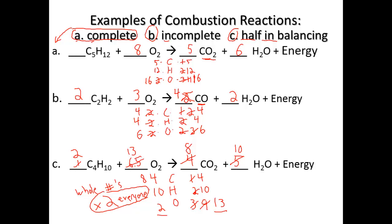We end up with eight carbons, twenty hydrogens, and twenty-six oxygens. On the same side, eight carbons, sixteen plus ten—let's see, twenty hydrogens, and sixteen plus ten equals twenty-six oxygens. So we're balanced in the end using one that had a half in there.